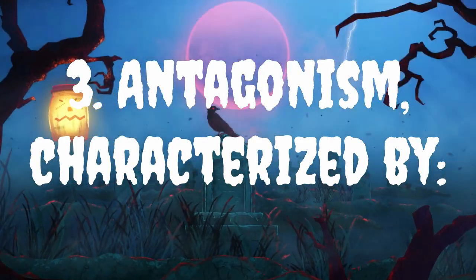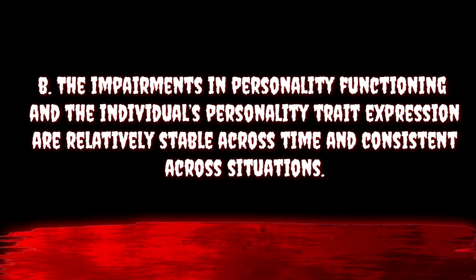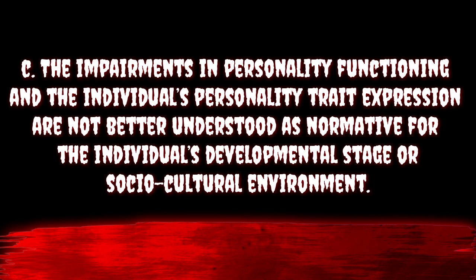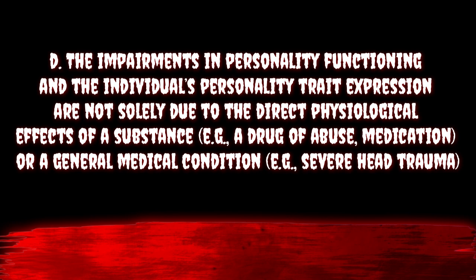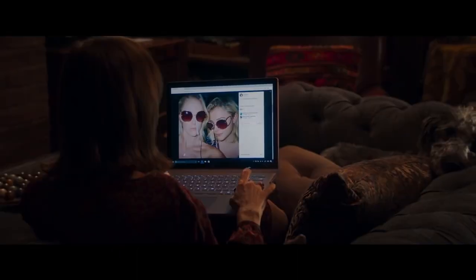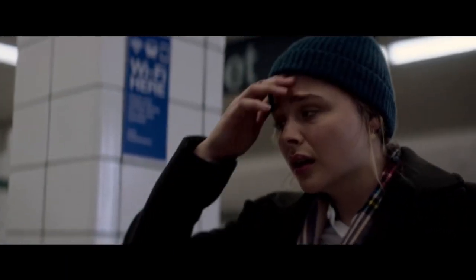Then we hit antagonism, characterised by hostility: persistent or frequent angry feelings, anger or irritability in response to minor slights and insults. The impairments in personality functioning and personality trait expression are relatively stable across time and consistent across all situations, not better understood as normative for the individual's developmental stage or socio-cultural environment, and not solely due to the physiological effects of a substance such as drug abuse, medication or a general medical condition such as severe head trauma. That was a whistle-stop tour of emotionally unstable personality disorder — you get the idea of the criteria, how it's formed, and how it interacts with the world in a very flawed and maladaptive way.